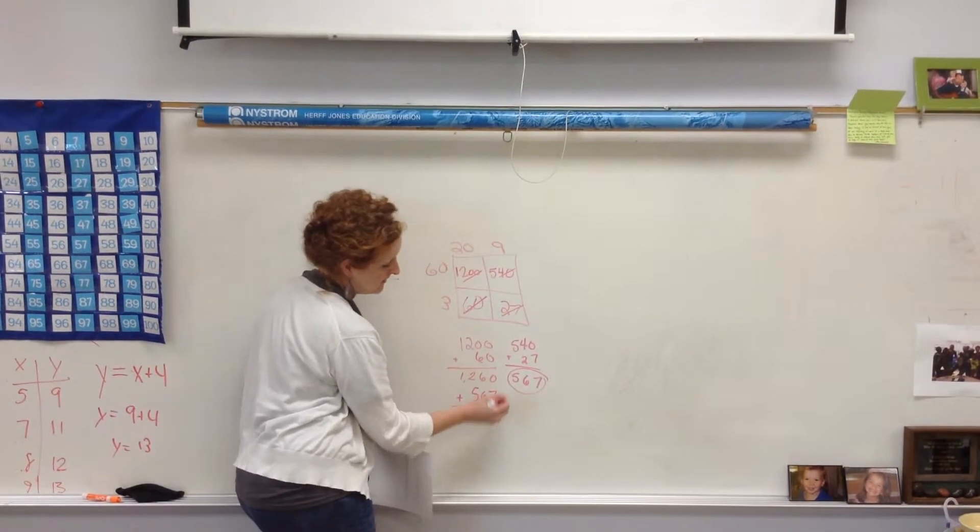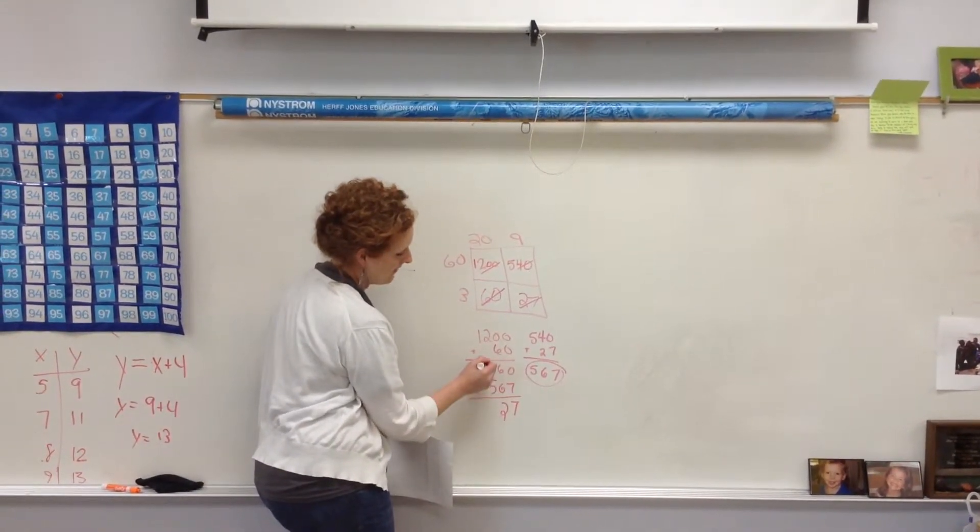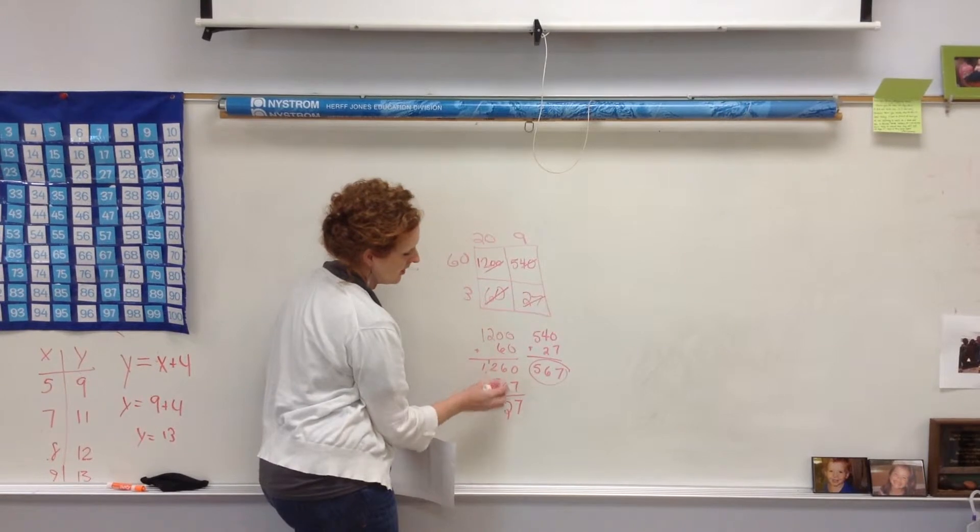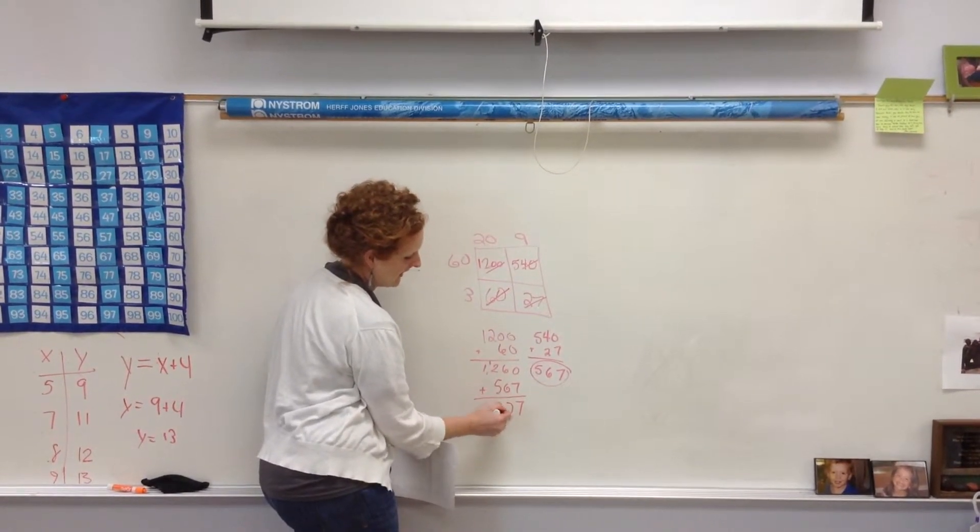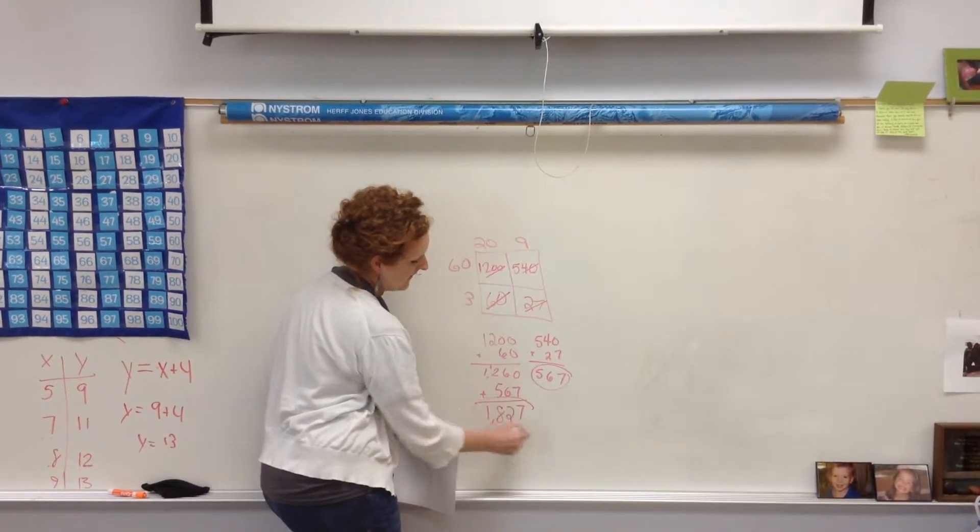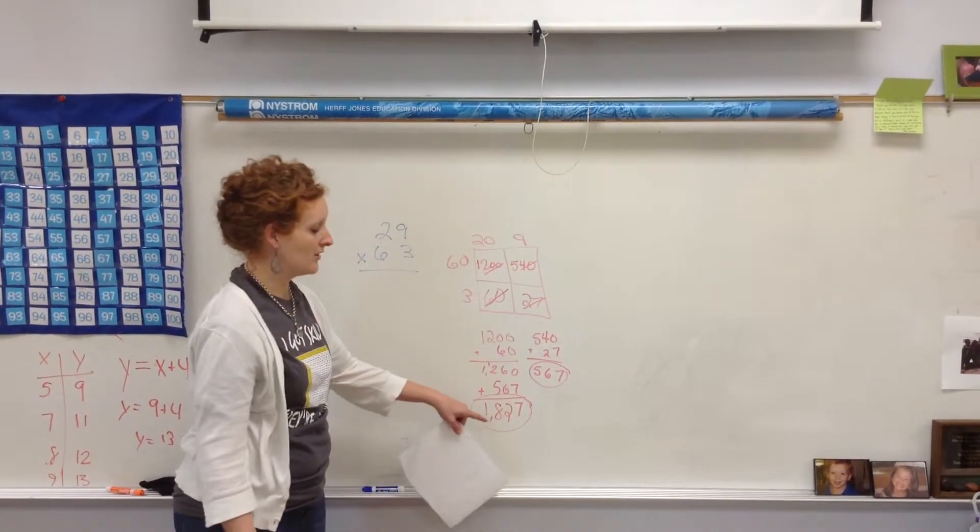Like I said, they may have different orders in which they do it, and that's okay as long as they're combining all of them together. And then, 1, 2, 3 plus the 5 is 8. Okay. So, my final product is 1,827.